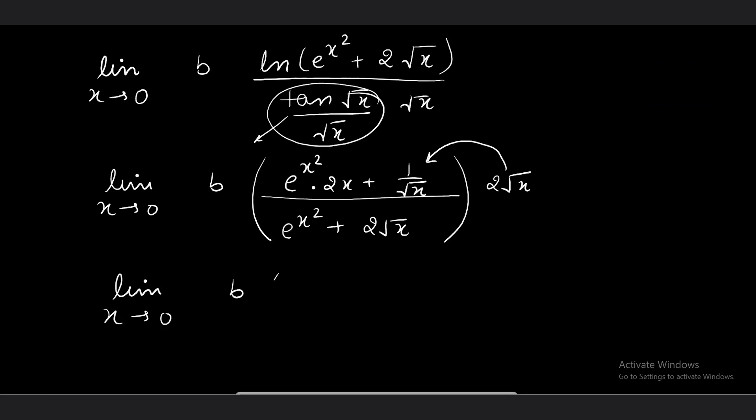Limit x → 0⁺, b times shifting it inside the bracket, this second term reduces to 2 in the numerator, denominator is e^(x²) + 2√x. When x → 0, this is 0, this is 2, and e⁰ + 0 = 1. So this limit is 2b.